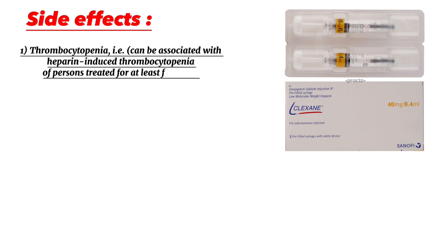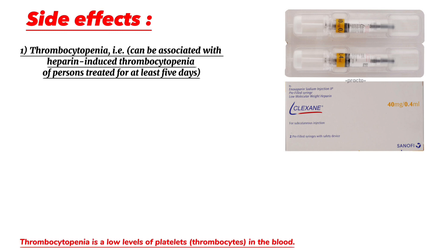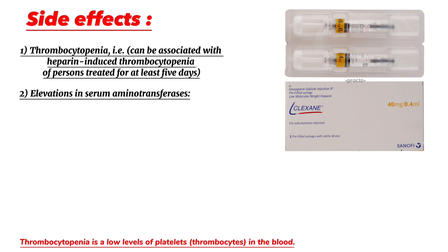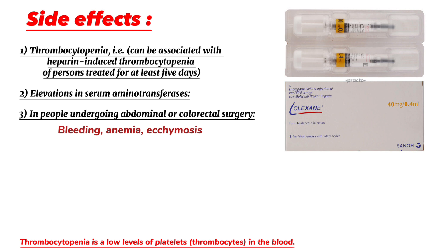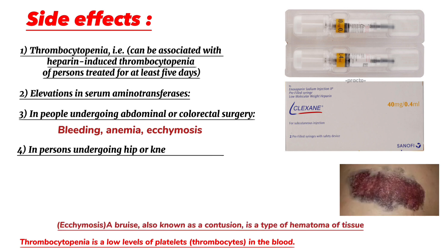Side effects of enoxaparin: Thrombocytopenia — it can be associated with heparin-induced thrombocytopenia in persons treated for at least 5 days. Elevations in serum aminotransferases. In people undergoing abdominal or colorectal surgery: bleeding, anemia, and ecchymosis.